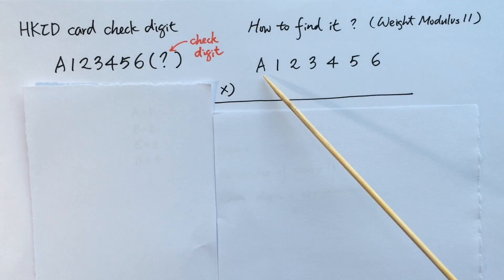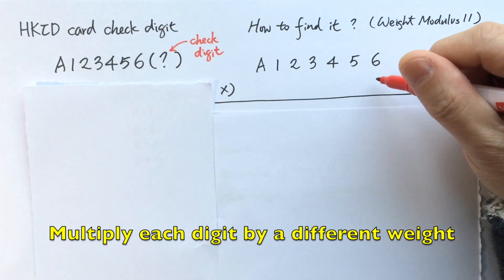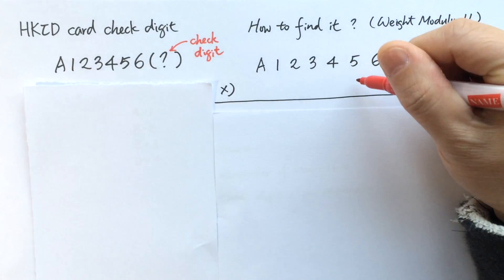If the HKID card is like this, A123456, then using the weight modulus 11 we multiply each number or each character by a weight. The weight starts from 2, 3, 4, 5, 6, 7, and 8.